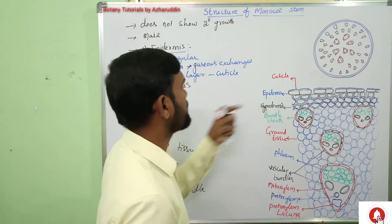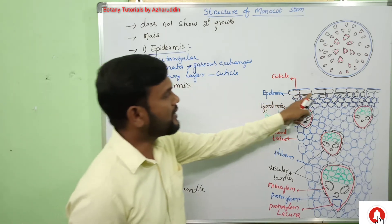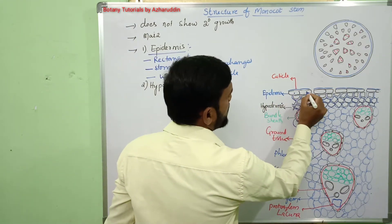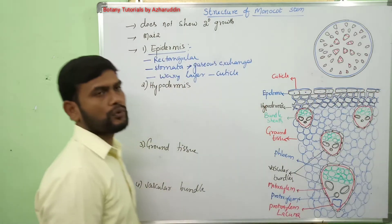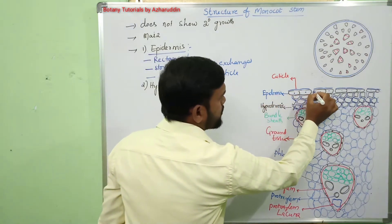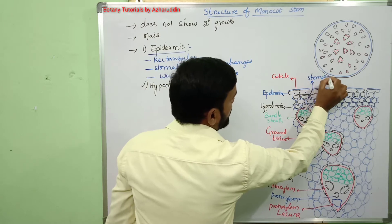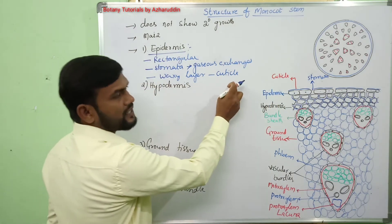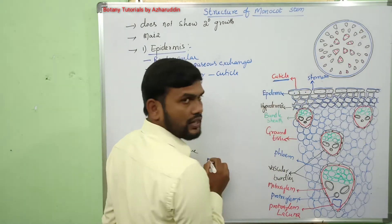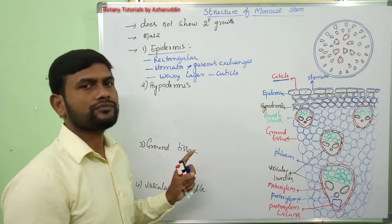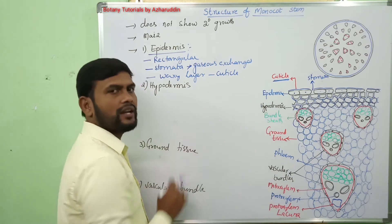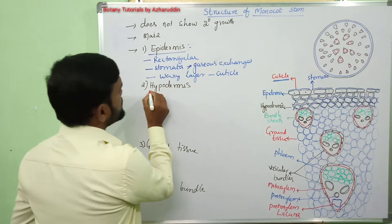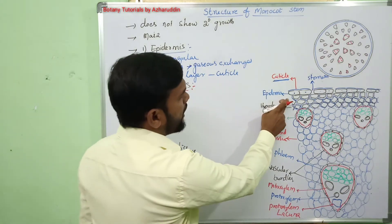The epidermis is the outermost layer containing a single row of rectangular cells with cytoplasm and a clear nucleus. The epidermis is interrupted by stomata, which are useful in exchange of gases. The epidermis is covered with a cuticle — the waxy layer — which prevents loss of water from the stem. The epidermis gives protection to the inner tissues.